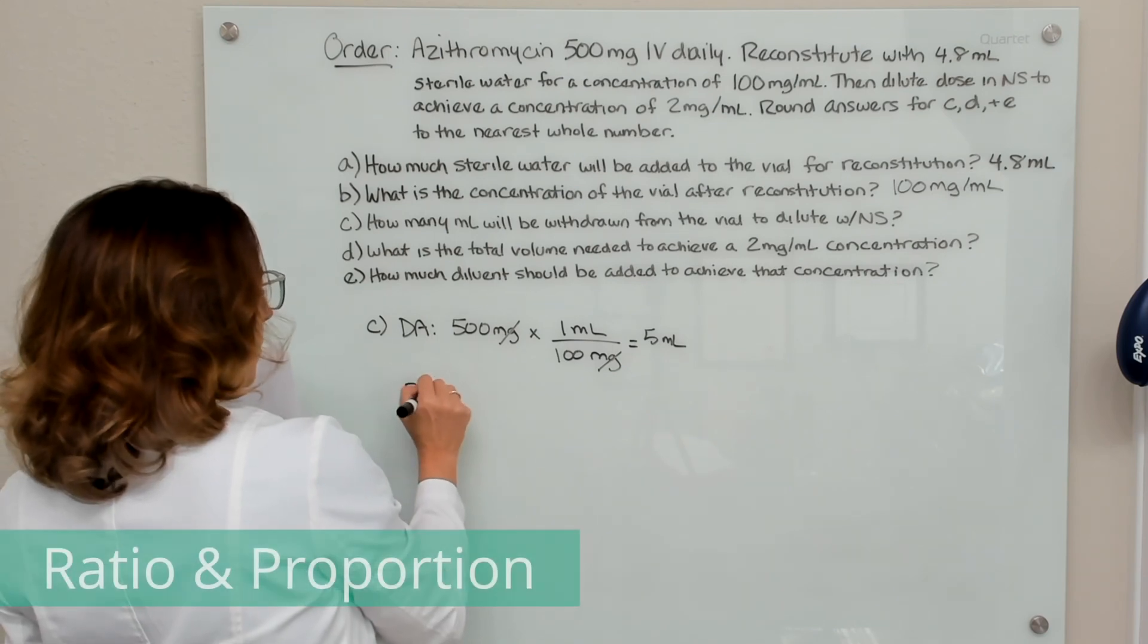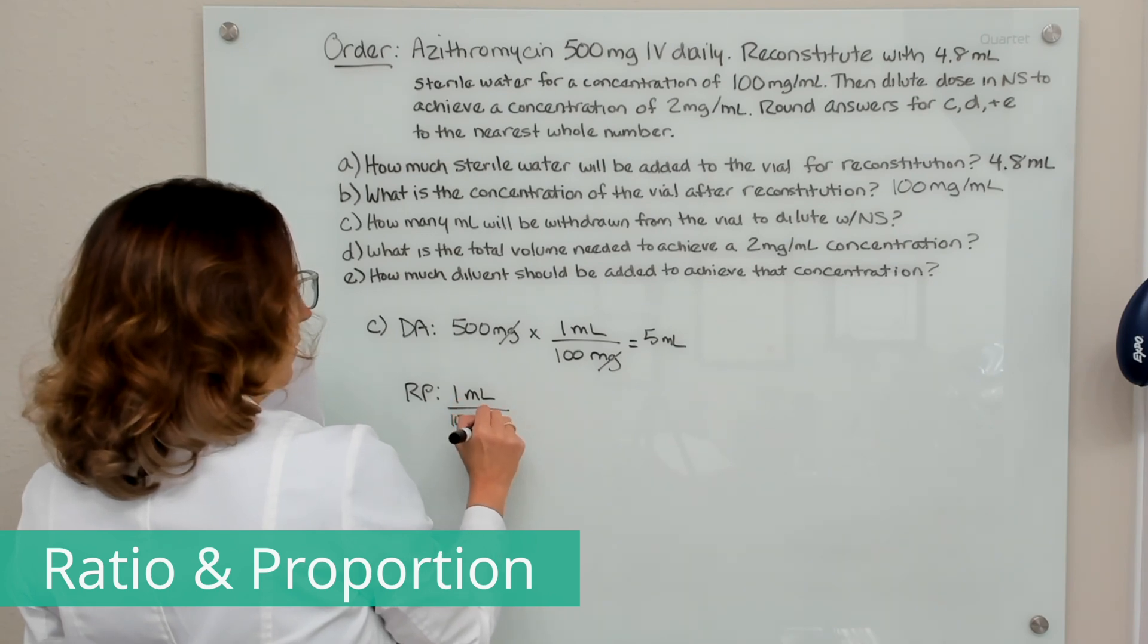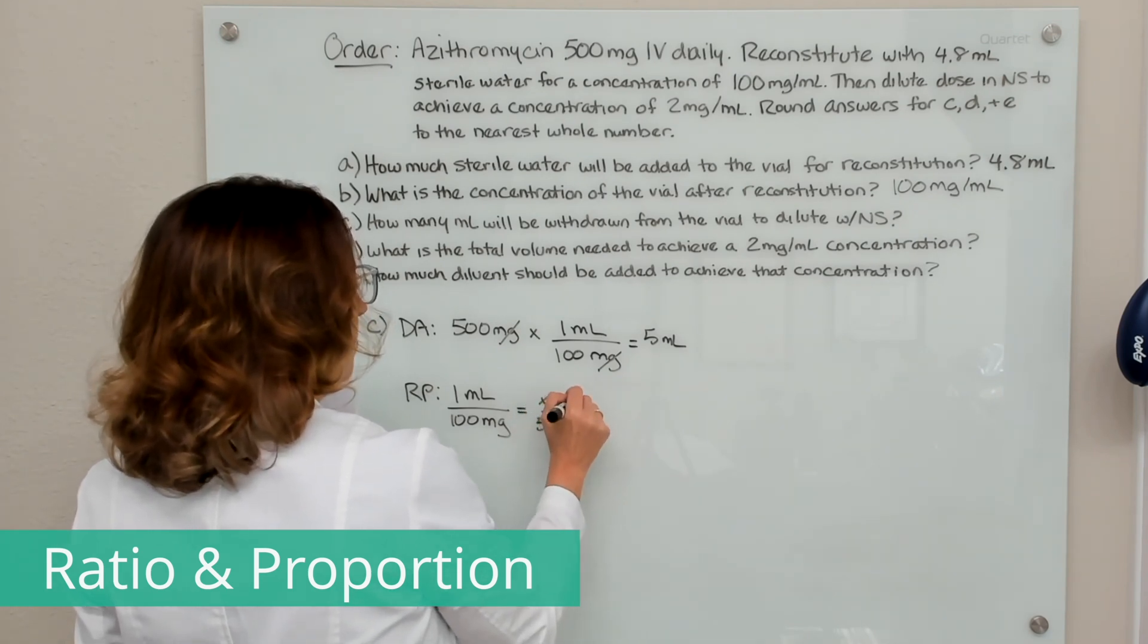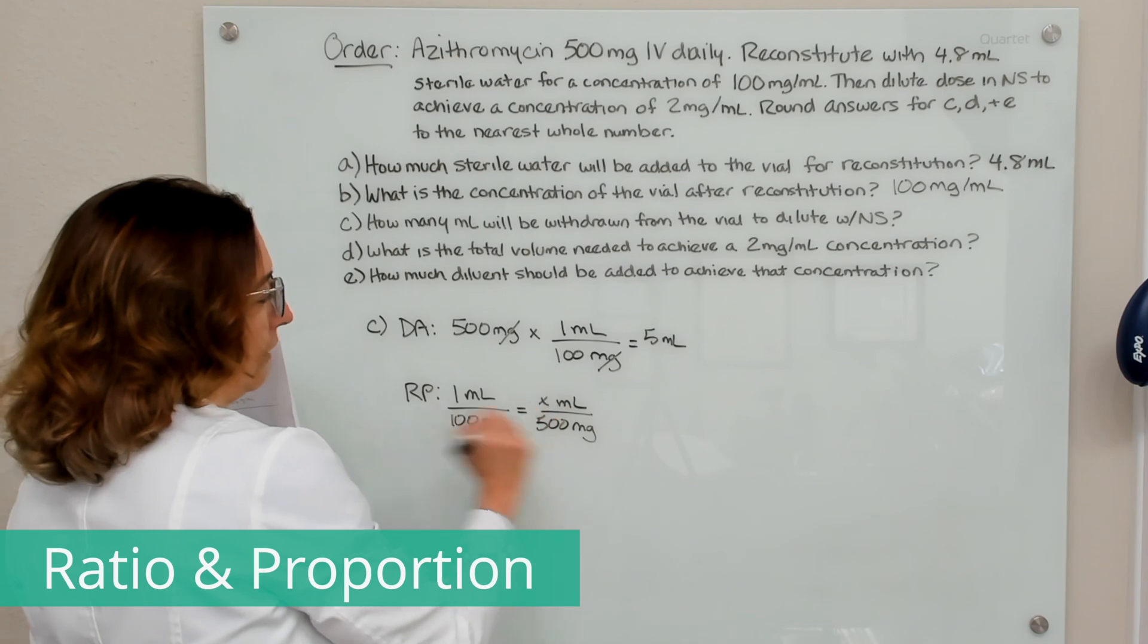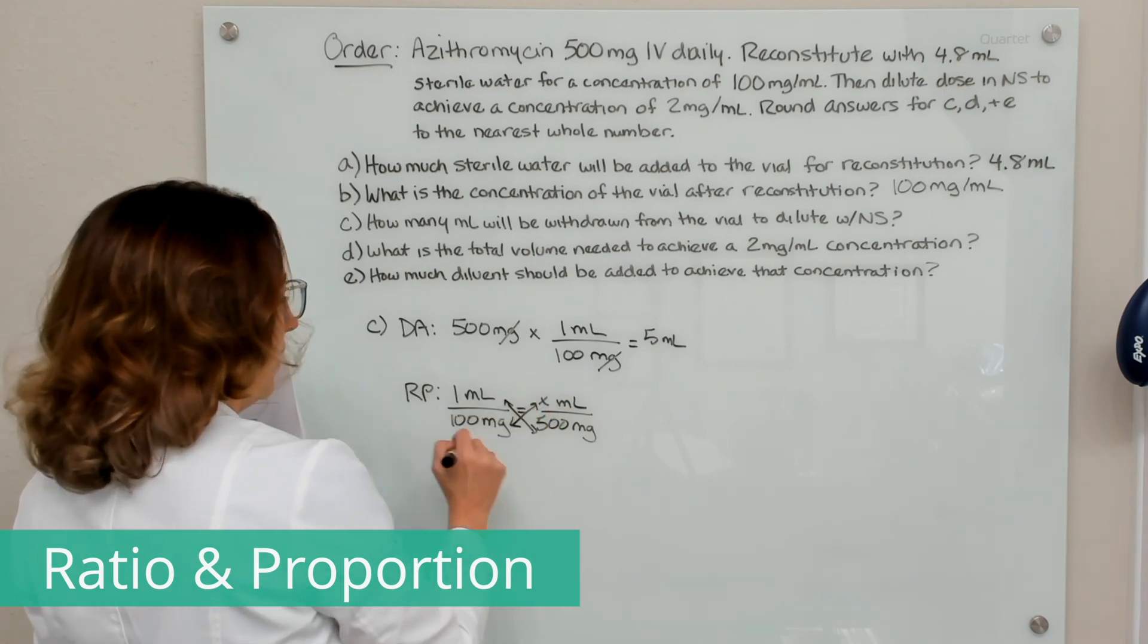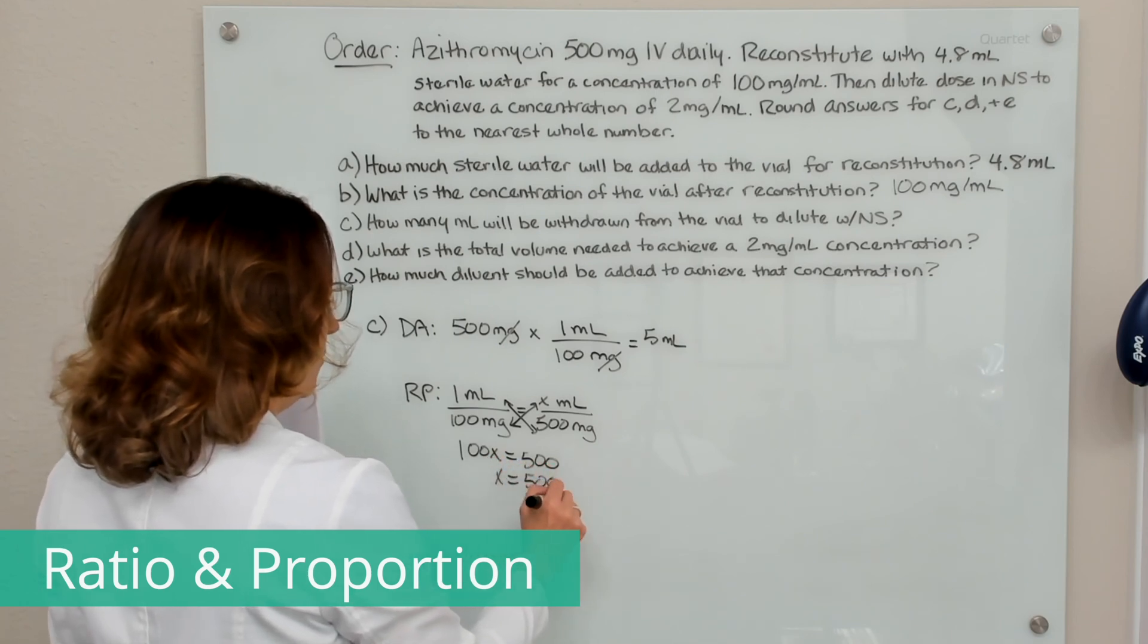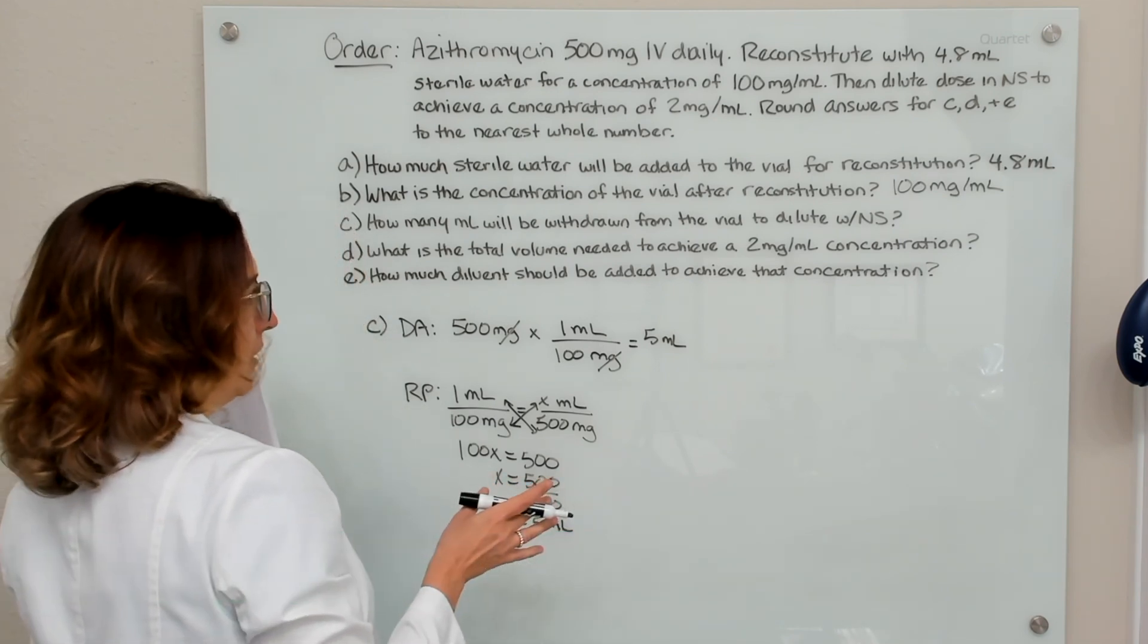We can also use ratio and proportion to do this. So our vial after reconstitution has this concentration and we want 500 milligrams, and we don't know how many milliliters that will take. So we're just comparing the known ratio to the unknown value. All right, we're going to cross multiply here. So 100x equals 1 times 500. x equals 500 divided by 100. So x equals 5 ml. And that's how we would solve it with ratio and proportion.